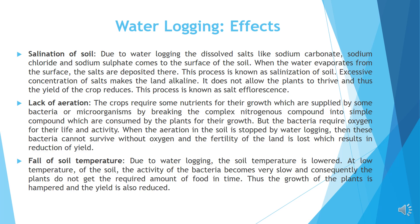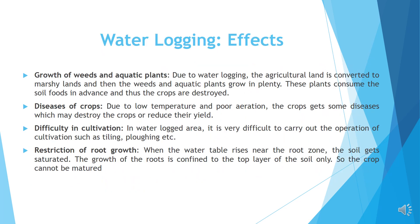Fall of soil temperature: Due to waterlogging, the soil temperature is lower. At low soil temperature, the activity of bacteria becomes very slow and consequently the plants do not get the required amount of food in time. Growth of weeds and aquatic plants: Due to waterlogging, the agricultural land is converted to marshy land and then weeds and aquatic plants grow in plenty. These plants consume the soil nutrients and thus the crops are destroyed. Diseases of crops: Due to low temperature and poor aeration, the crops get diseases which may destroy the crops or reduce their yield.